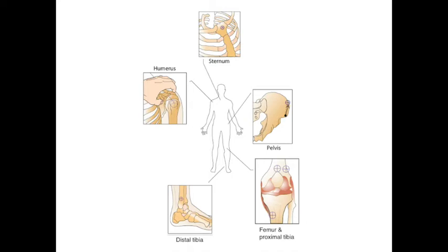We will now take a look at the selection of insertion sites. There are some differences between children and adults — for example, the sternum is not used in children because of possible penetration and injury to the heart and great vessels, but it is used in adults. Pelvis is rarely used in both. Distal femur is used in children but not in adults, because there is a lot of overlying tissue making site identification and needle penetration challenging. By far the most often used site in both children and adults is proximal tibia, followed by humerus and distal tibia.